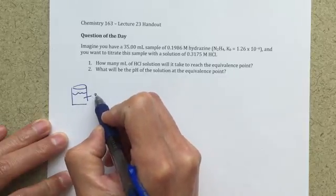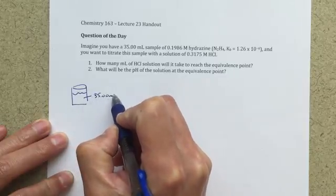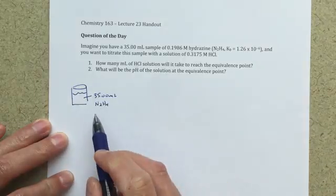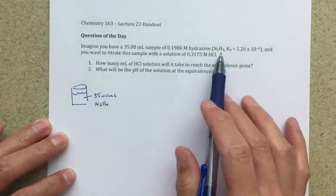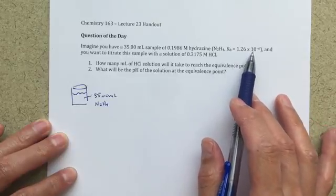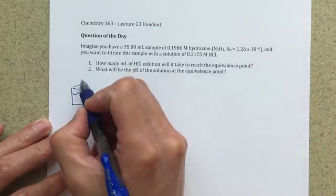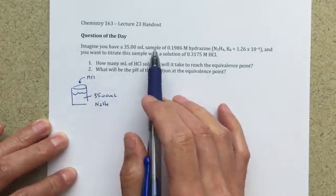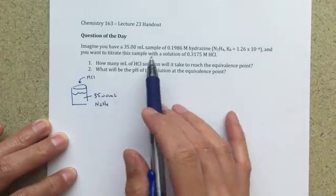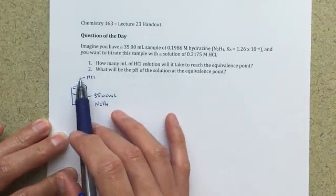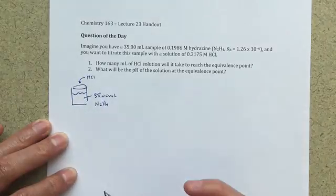In my flask, this would be my 35.00 milliliters of the N2H4, and right away when I'm looking at this N2H4, I'm going to say that that's a weak base. Because you're given this Kb, that suggests that this is going to be a weak base. And then to that, we're going to be adding the HCl. Imagine you have a 35 milliliter sample, and you want to titrate the sample with a solution of HCl. This is my molarity of my HCl that I'm going to be adding in, titrating the sample.